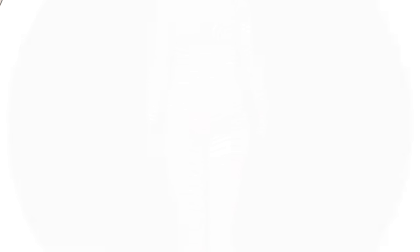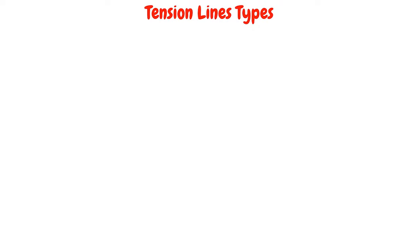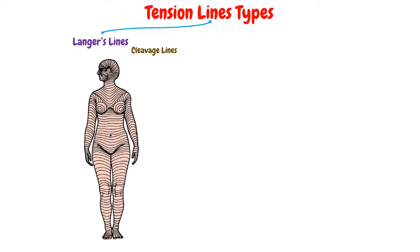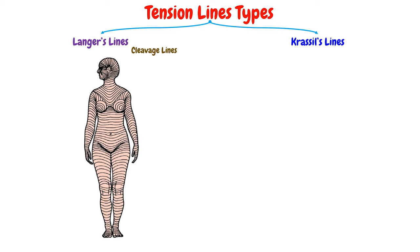We said in the past video that the skin tension lines will have two main types, the Langer's lines, or the cleavage lines, and the Kraissl's lines, or the wrinkle lines.